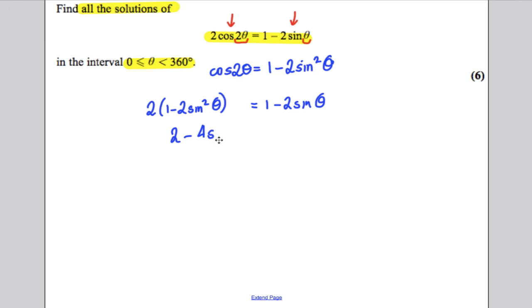2 subtract 4 sine squared of theta must be equal to 1 subtract 2 sine theta. Let's add 4 sine squared theta onto both sides and subtract 2. So 0 would be equal to 4 sine squared theta.